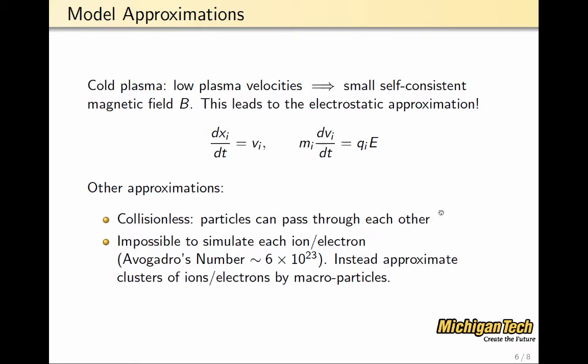Another approximation that we have implicitly made is that it's going to be impossible to simulate each and every ion and electron in the system. For example, we know that Avogadro's number is 6 times 10 to the 23rd.